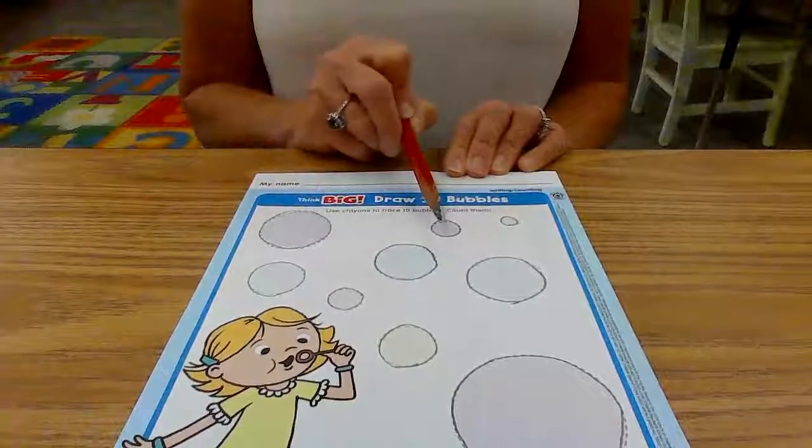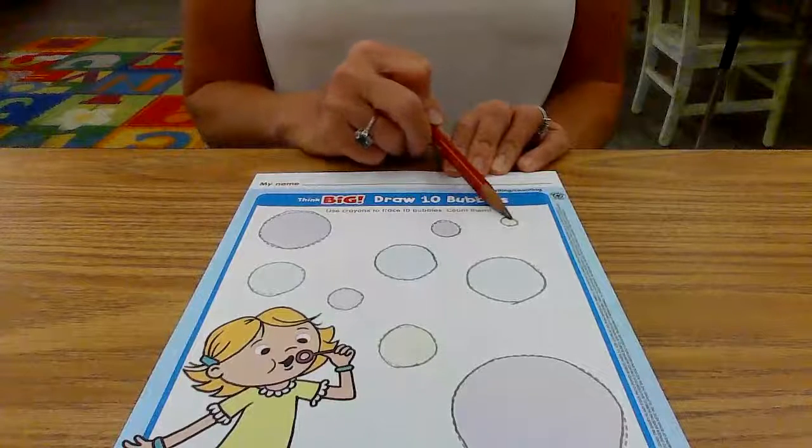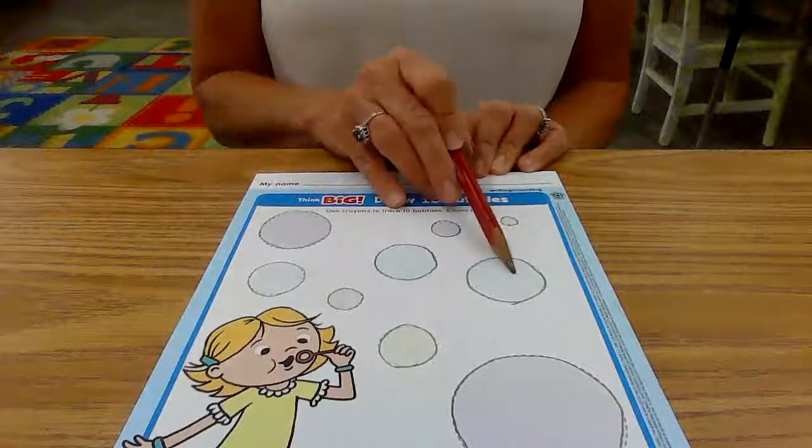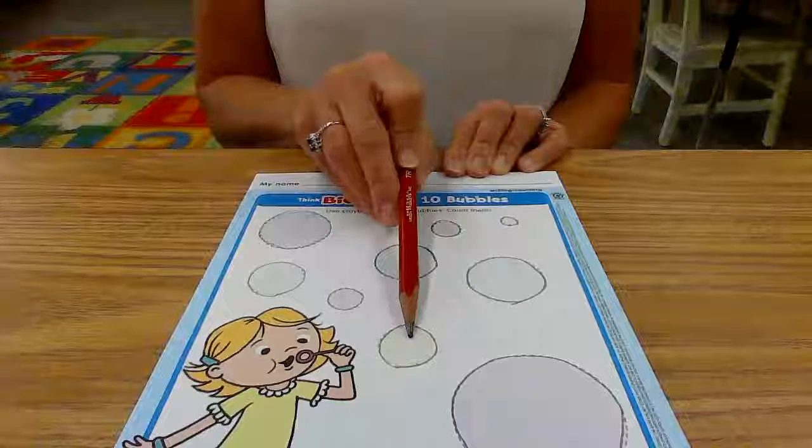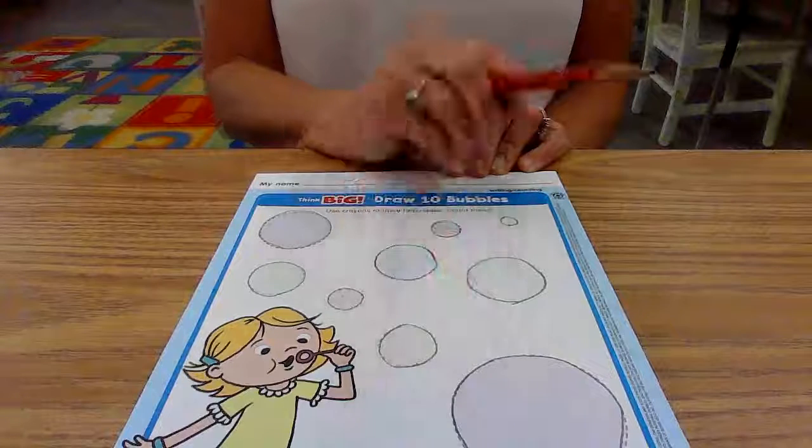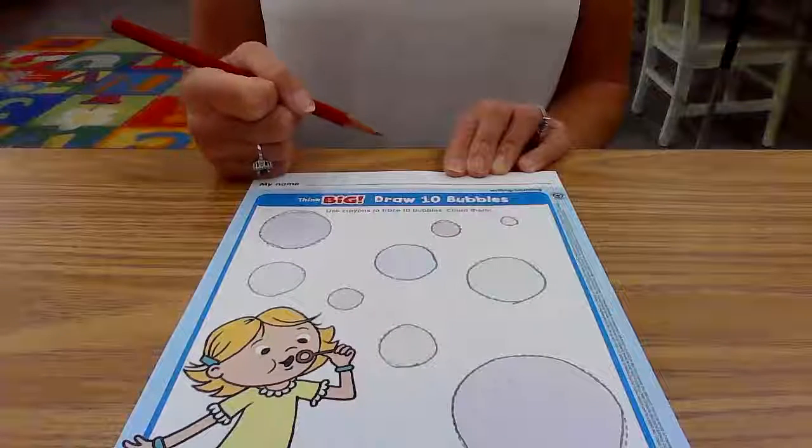One. Two. Three. Four. Five. Six. Seven. Eight. Nine. Ten. We traced 10 bubbles.